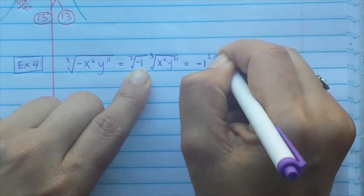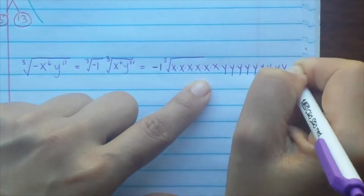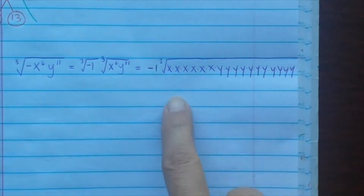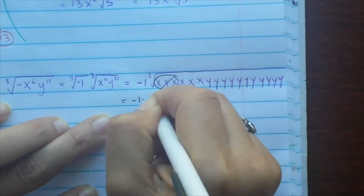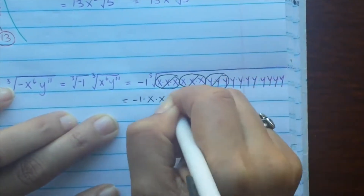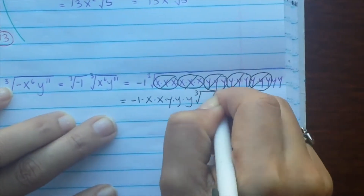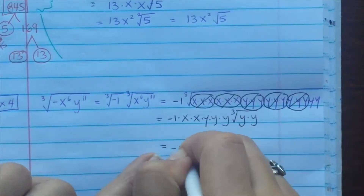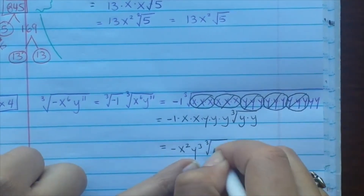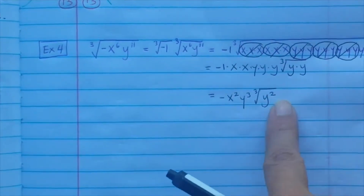Break it down: 6 x's and 11 y's. We need books of 3. Circle groups of 3: we get negative 1 outside, two x's outside (x^2), and three y's outside (y^3). What's left inside? Two y's (y^2). Combine like terms: negative x^2 y^3 cube root of y^2. Since n was odd, no absolute value needed. That's our answer. It's a special case when you have a negative inside — you have to think backwards.